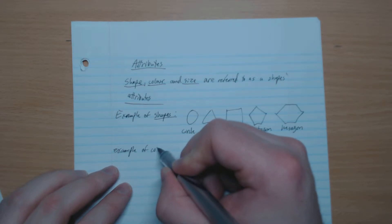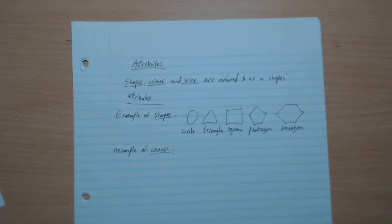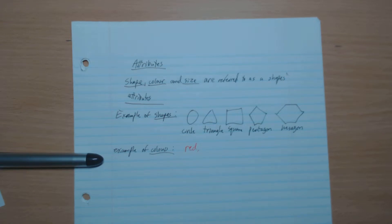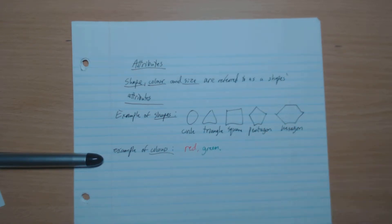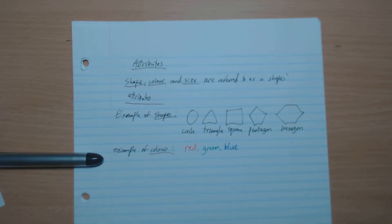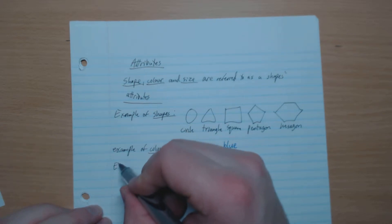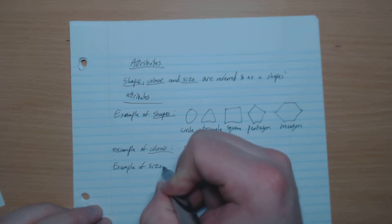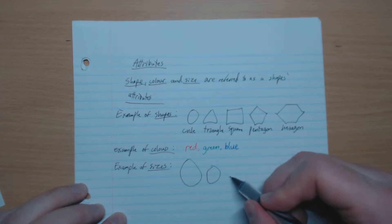Examples of colors — you guys know this. You can have red, you can have green, and we can have blue. Just some examples of colors. Examples of sizes: we're going to have large, medium, and small.